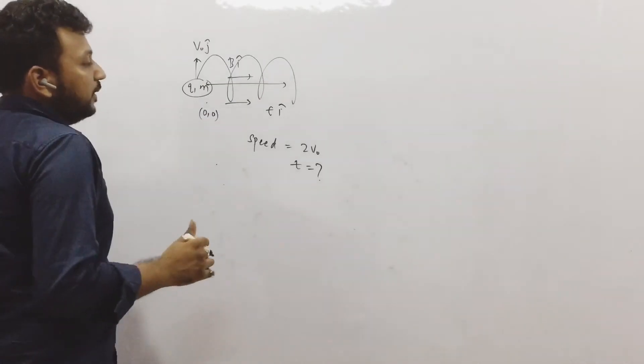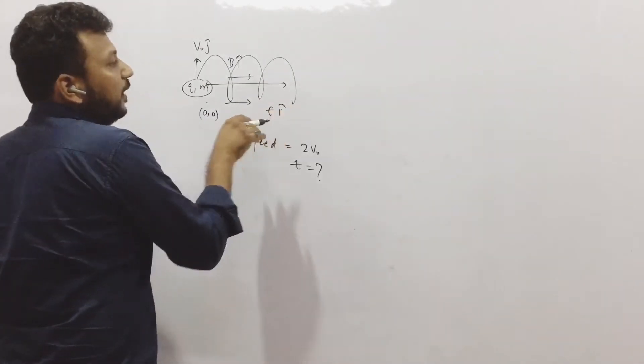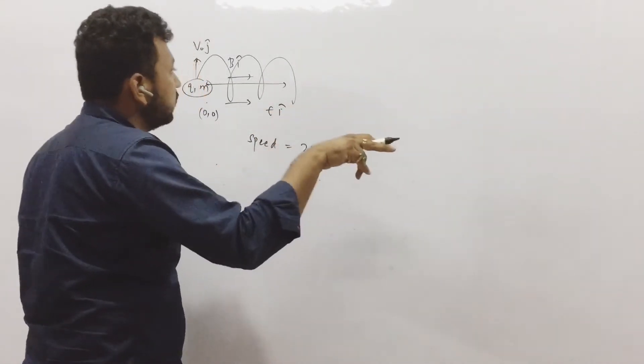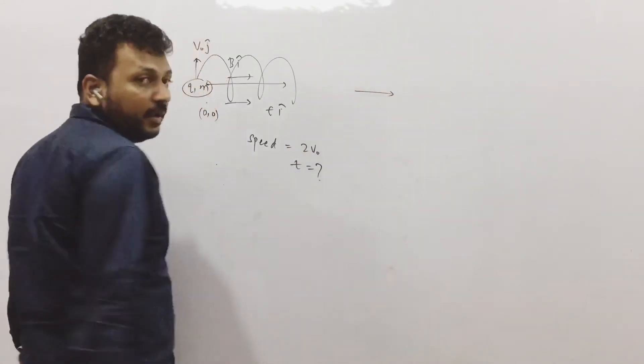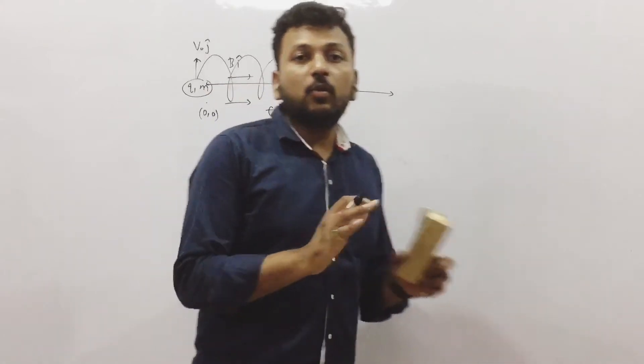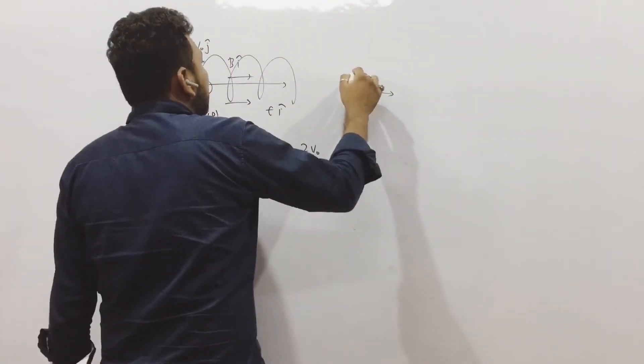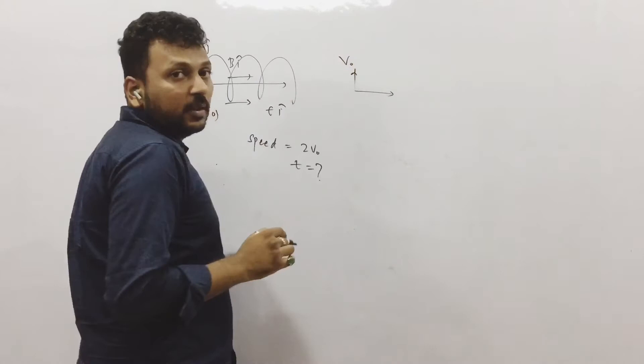So the other way is, see, electric field will increase the velocity in this direction. That means ultimately when it will have some velocity here, magnetic field will only rotate it. That means in y-direction, the velocity is going to remain constant.